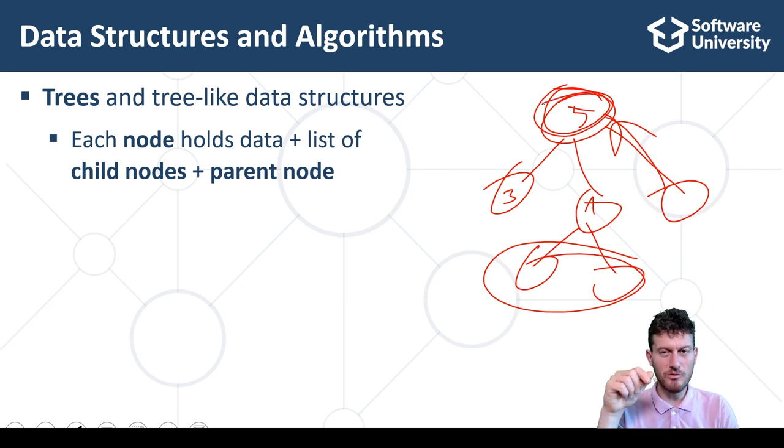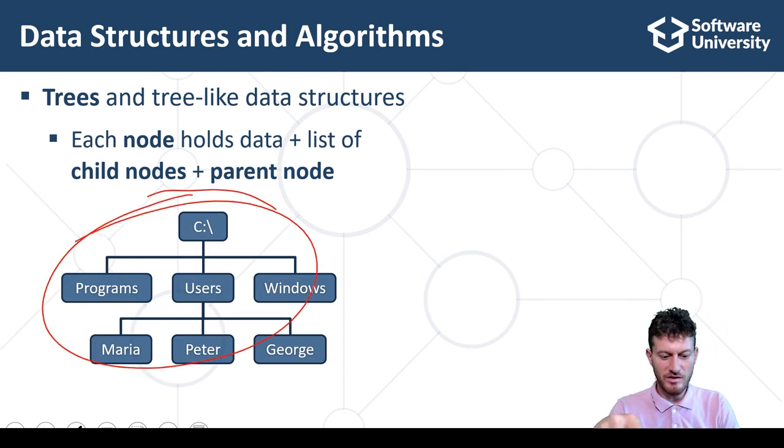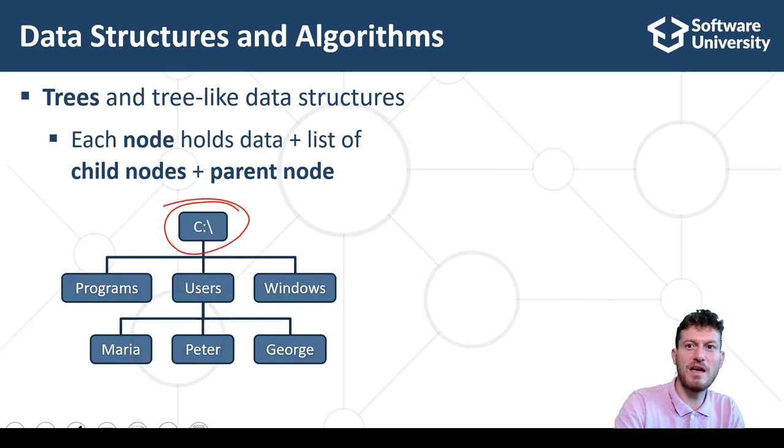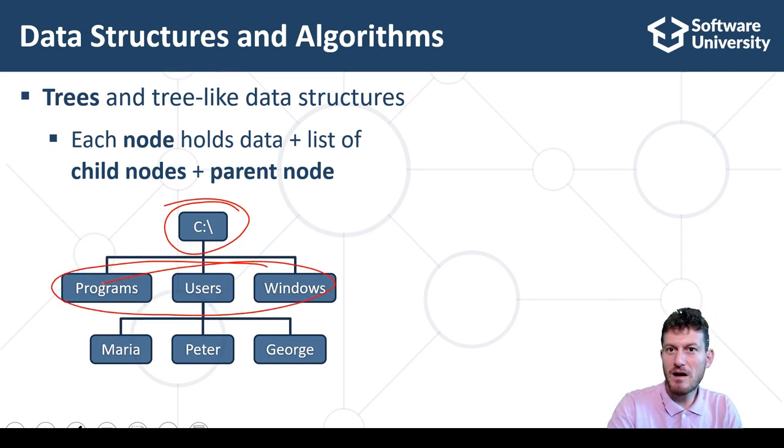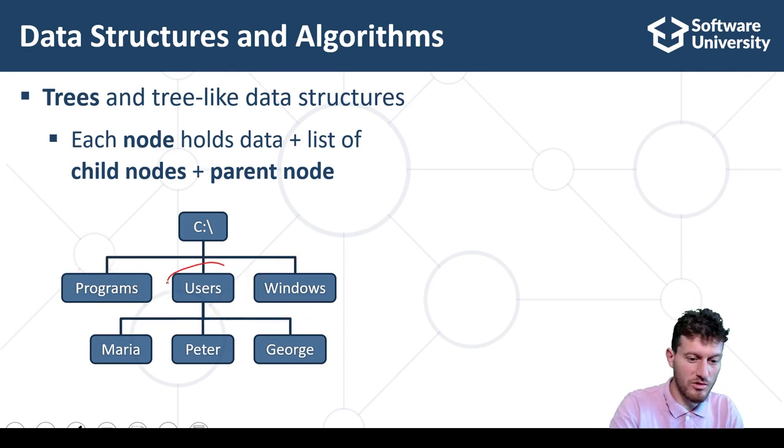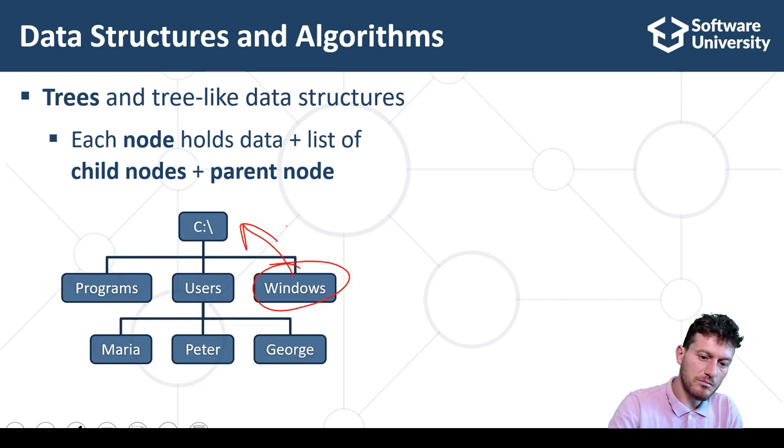This example illustrates visually a tree. This is a tree holding the directory structure of a hard drive in Windows. The root node, C: backslash, has three child nodes: Programs, Users, and Windows. The other nodes have no children. Each node except the root has a parent node.